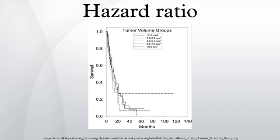By contrast, a treatment group in which 50% of infections are resolved after one week yields a hazard ratio of 2. If it takes 10 weeks for all cases in the treatment group and half of cases in the control group to resolve, the 10-week hazard ratio remains at 2, but the median endpoint time ratio is 10, a clinically significant difference.